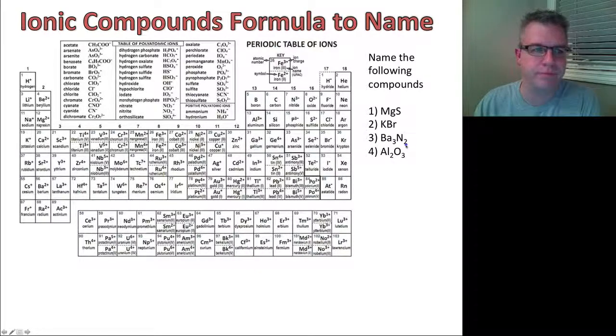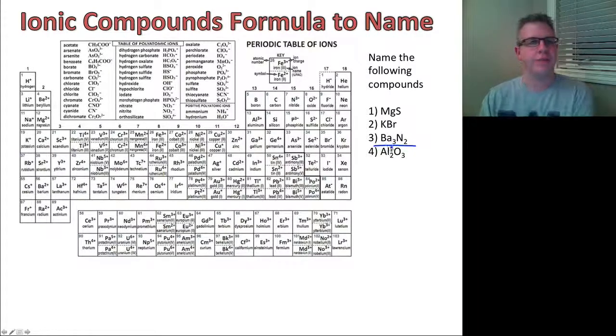Let's move on to our third one. Ba3N2. When we go from the formula to the name, I'm going to disregard these numbers right now, the charges on these. When we get to multivalent charges, we'll go through a few of those examples. But for now, we can absolutely disregard the 3 and the 2 here.